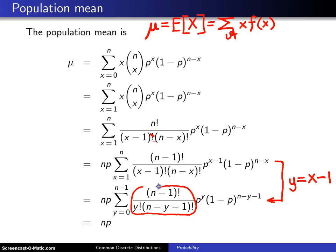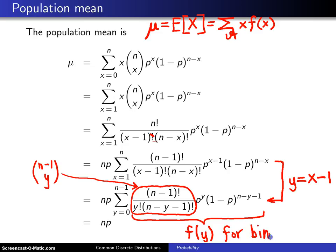This constant out front, you can recognize as (n-1) choose y. And once this is recognized as (n-1) choose y, you then can look at this entire summand here as f(y) for a binomial random variable. In other words, it's the probability mass function for a binomial random variable with parameters n-1 and p.